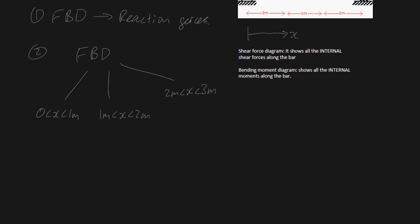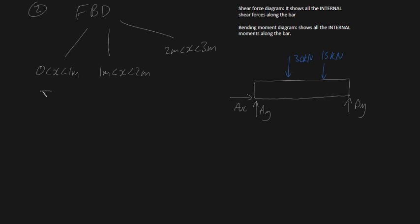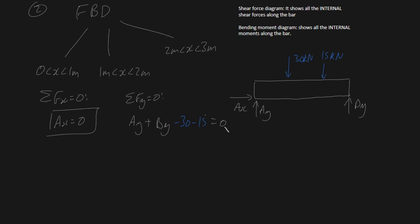Let's get involved in solving this. Here is our bar where we've replaced the supports with external forces. We've got Ay here, Ax here, By here, and our 30 kilonewton force downwards, and also 15 kilonewtons. The sum of forces in the x direction equals 0, which implies Ax equals 0. The sum of forces in the y direction equals 0, meaning Ay plus By equals 45 kilonewtons.